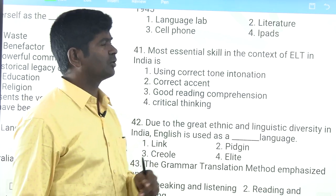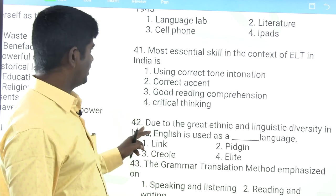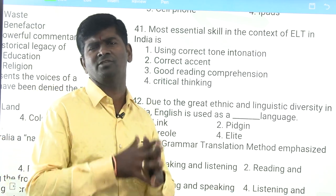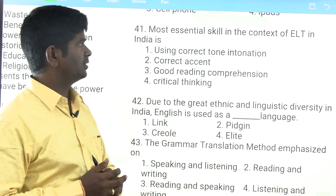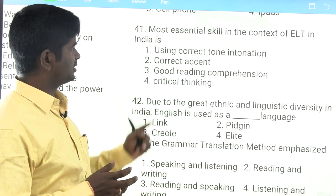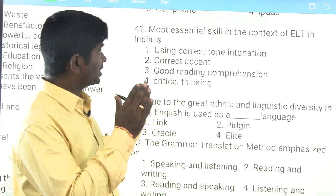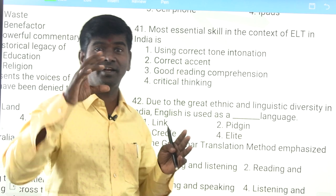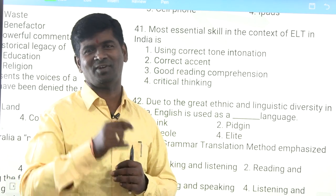Question 41: 'The most essential skill in the context of ELT in India is...' — options include: using correct tone, intonation and correct accent; good reading comprehension; and critical thinking. The answer is good reading comprehension. Starting from independence in 1947, one of the most important skills has been whether learners are able to read and comprehend text — a very important skill to be acquired by every learner at different stages.